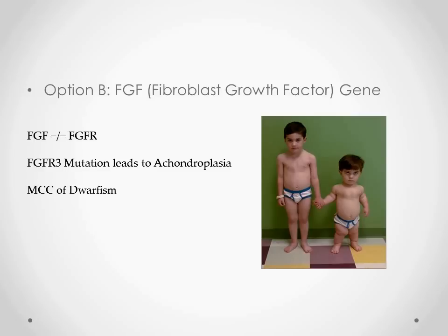Option B is the fibroblast growth factor gene. The fibroblast growth factor gene is not the same as the fibroblast growth factor receptor — FGF is not equal to FGFR. We emphasize this because a very popular exam question involves achondroplasia, the most common cause of dwarfism in humans. The achondroplastic child has an FGFR3 mutation — a subtype of the fibroblast growth factor receptors. Examiners try to confuse you by giving both FGF and FGFR as options, so remember: it's FGFR, not FGF.